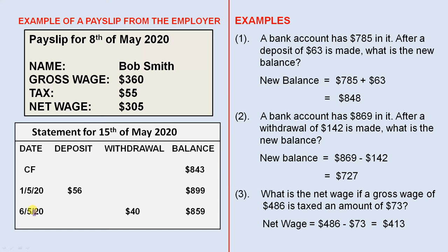On the 6th of May, a withdrawal of $40 was made, so the new balance is $859, which is $899 take away $40.